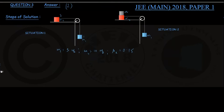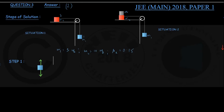In step 1, we consider situation 1 and draw the free body diagrams of the two blocks. For the block of mass m1, the forces acting on it are the force of gravity acting vertically downwards and the force of tension given by the string vertically upwards. I choose the positive y direction vertically downwards, and the acceleration of the block is a downwards. The force of gravity is m1g and the force of tension is T.